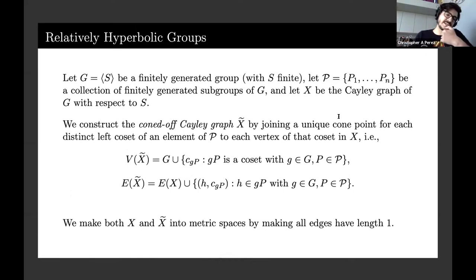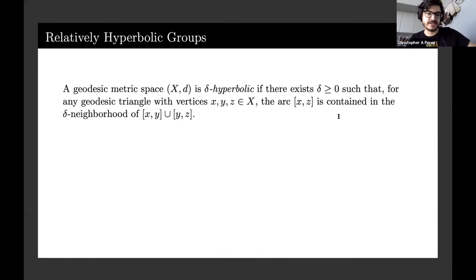We make both X and X tilde into metric spaces by giving all edges length one. A geodesic metric space is delta hyperbolic if there exists delta greater than or equal to zero so that for any geodesic triangle, any side is within a delta neighborhood of the other two sides. This is the thin or slim triangles condition. The idea is those triangles look skinny in these sorts of spaces.